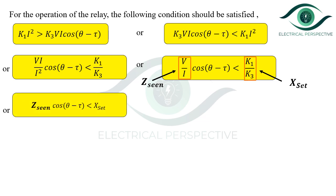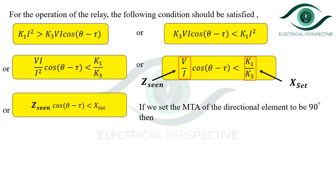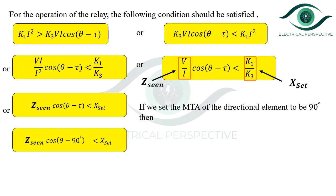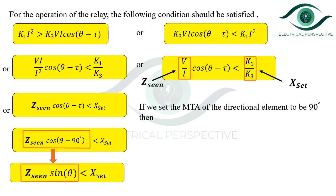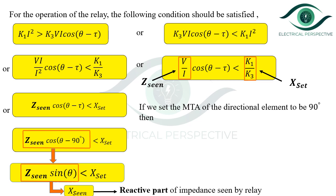So we get Z_seen·cos(θ − τ) < X_s. If we set the MTA (maximum torque angle) of the directional element to 90°, then Z_seen·cos(θ − 90°) < X_s. Replacing τ with 90°, Z_seen·cos(θ − 90°) = Z_seen·sin(θ), which should be less than X_s. Z_seen·sin(θ) is the X_seen — the reactive part of the impedance seen by the relay. So the trip law is: X_seen < X_s.